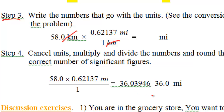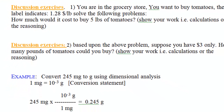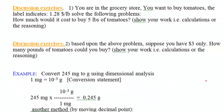Always round off so that the number of significant figures in your answer equals the number of figures in the input. The input here is 58 kilometers — treating it as 58.0, it has three significant figures — so you round your answer to three figures as well.